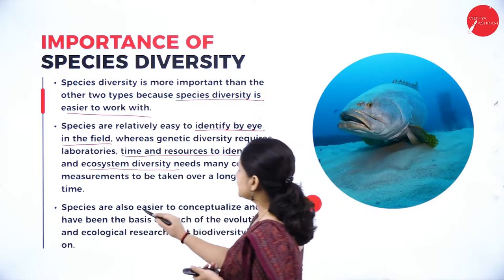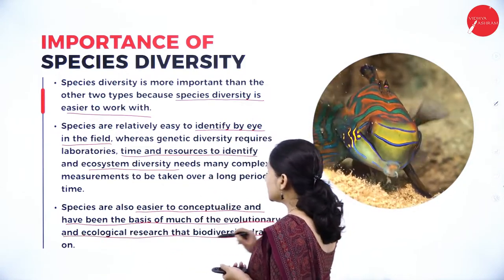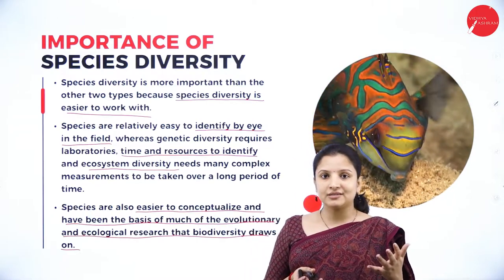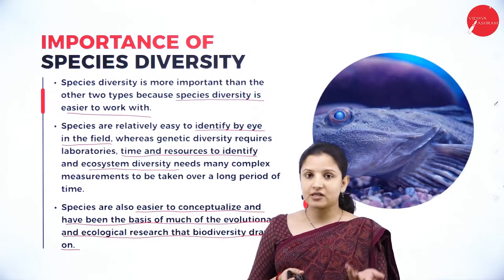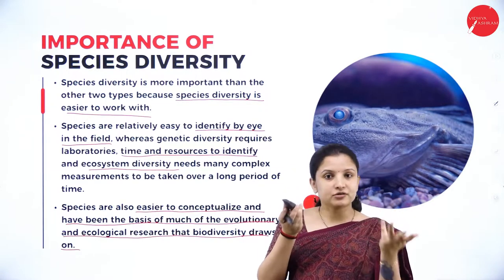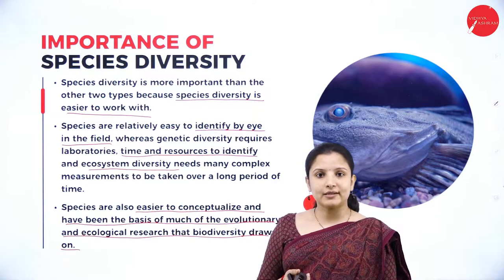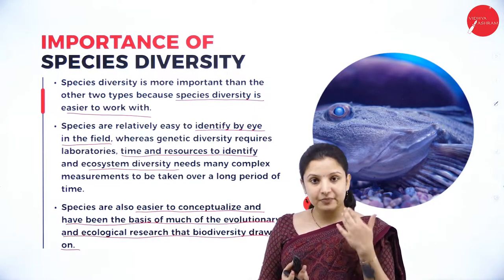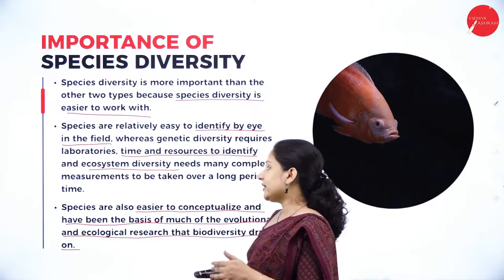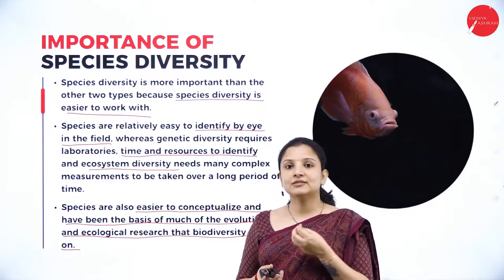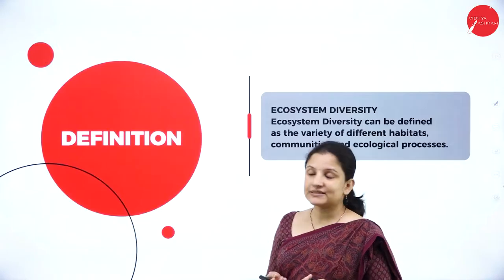Species are also easier to conceptualize and have been the basis for much of the evolutionary and ecological research. For example, humans and monkeys both have five digits, similar skull structure, similar feeding habits, and comparable intelligence to some extent — all these similarities made scientists think there might be a relationship between humans and monkeys, and they went in to study it. That is how, just by looking, it is easy to conceptualize species diversity compared to genetic and ecosystem diversity.